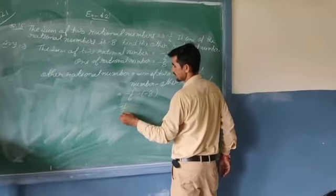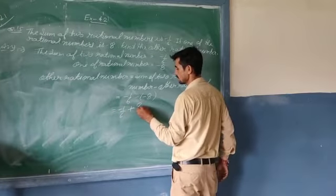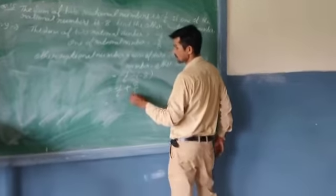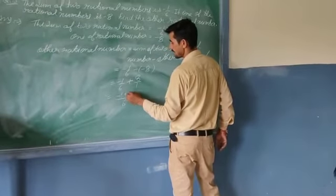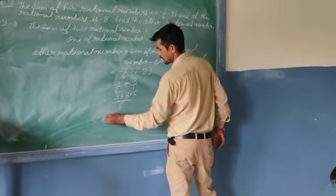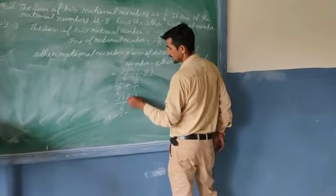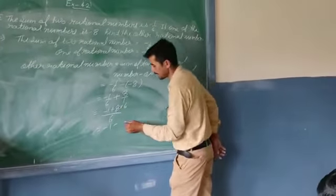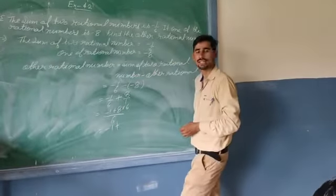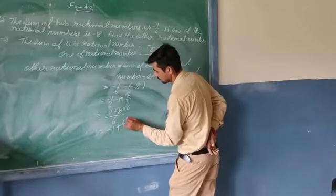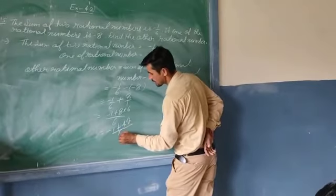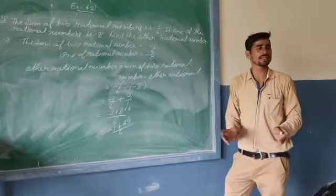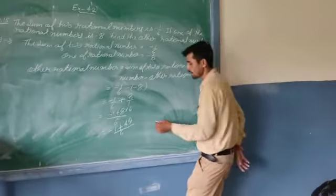Minus one upon six minus minus eight. Minus minus is plus. Simplify as minus one upon six plus eight multiply six. Minus one plus 48 upon six. 48 minus one, the answer is 47 upon six.